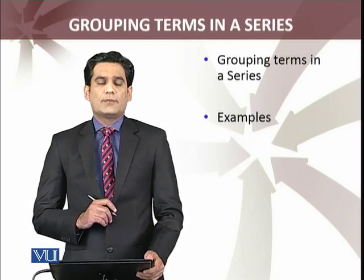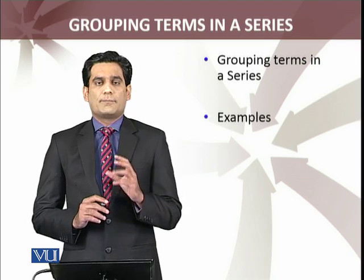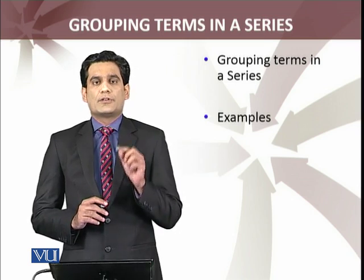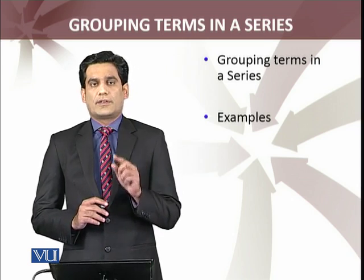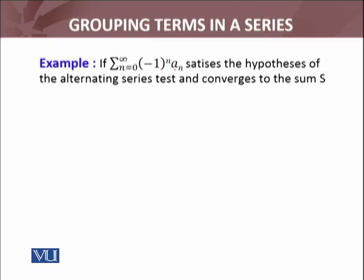We are going to discuss an example which includes the alternating series. If summation n equals 0 to infinity of minus 1 raised to power n times a_n satisfies the hypothesis of the alternating series test and converges to some value s.